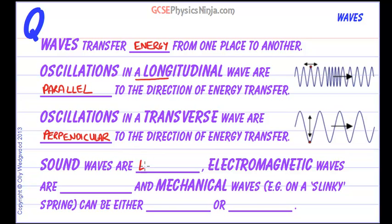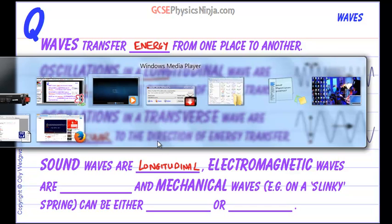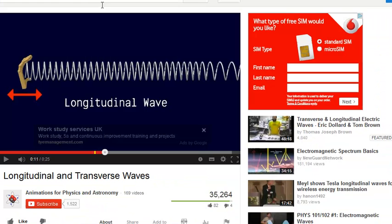Sound waves are longitudinal. It's caused by a vibration of a membrane, for example your vocal cords. That makes air molecules bounce into their neighbours and moves a pulse of energy along through the air. The actual air molecules just move back and forth along the direction of the wave motion — so parallel — making it a longitudinal wave.